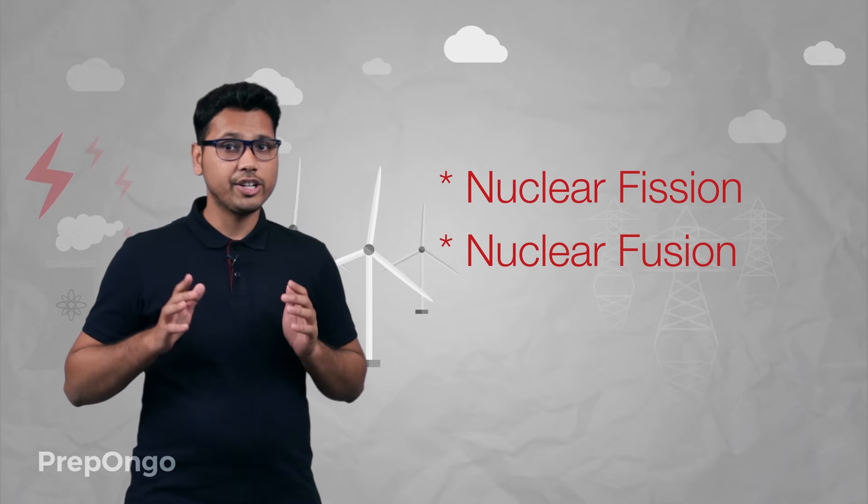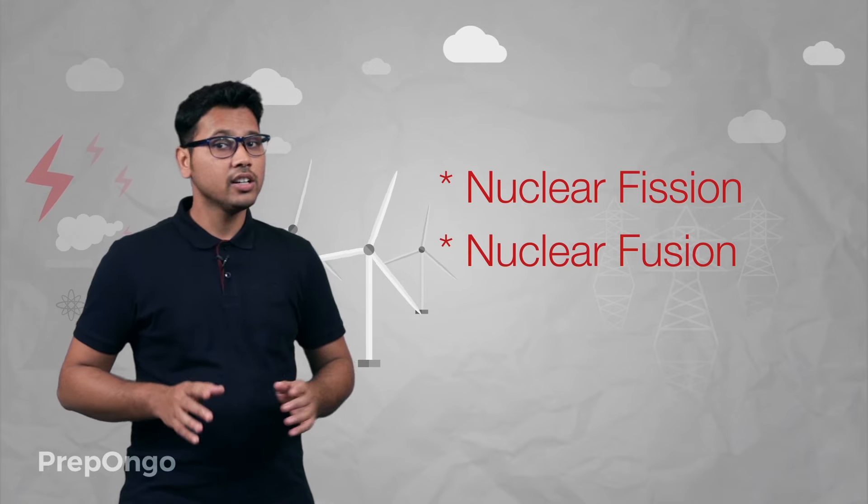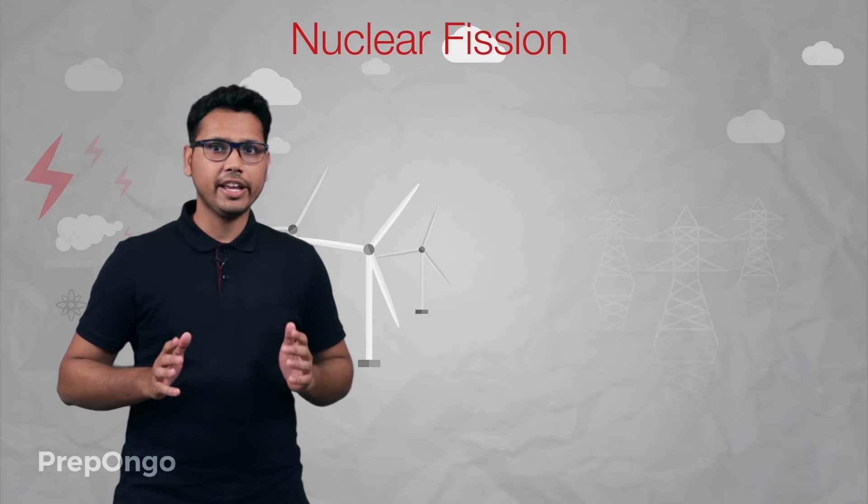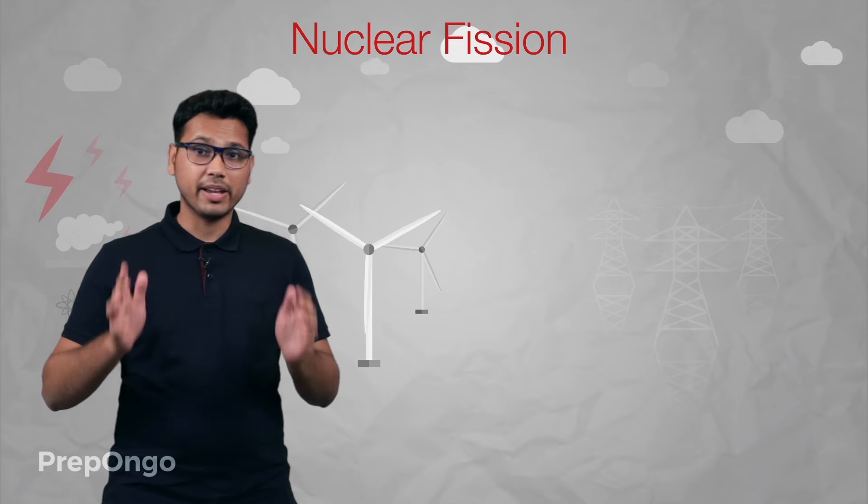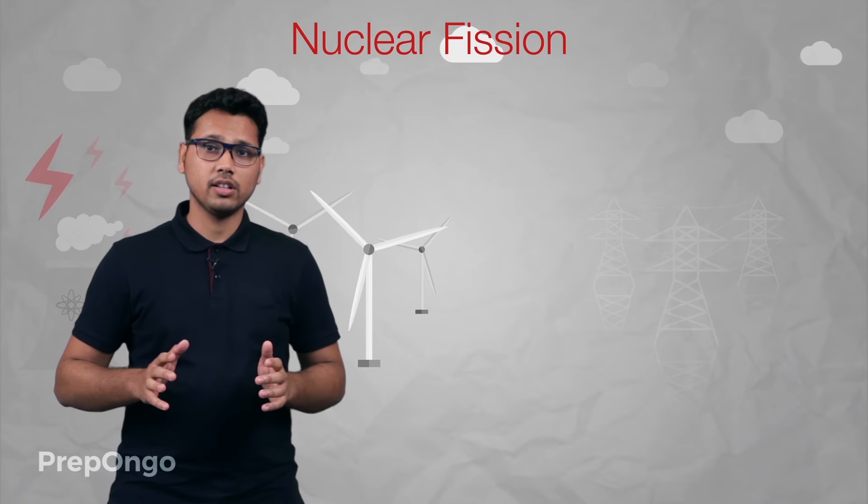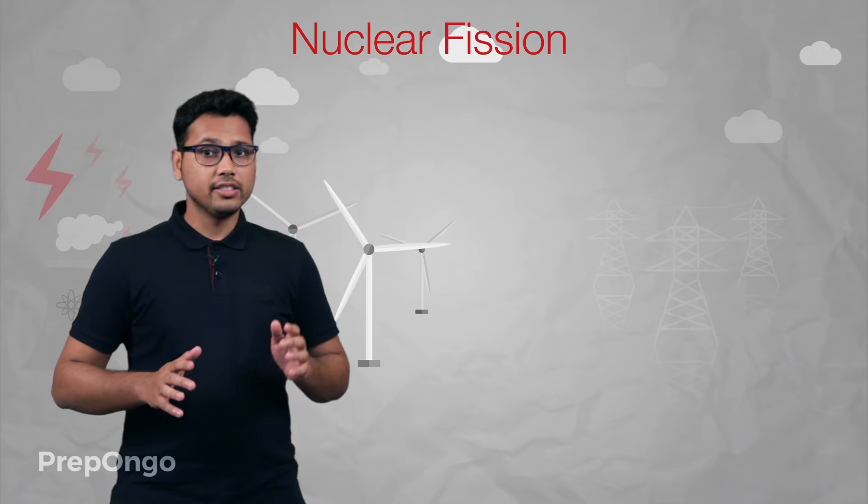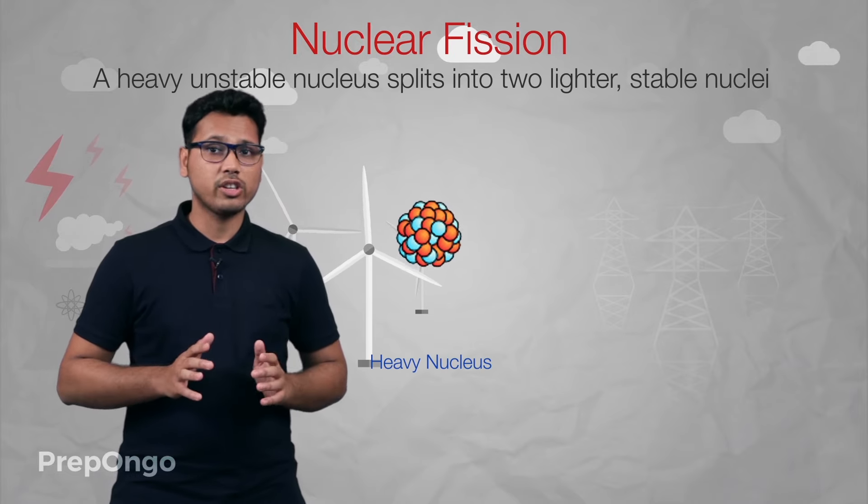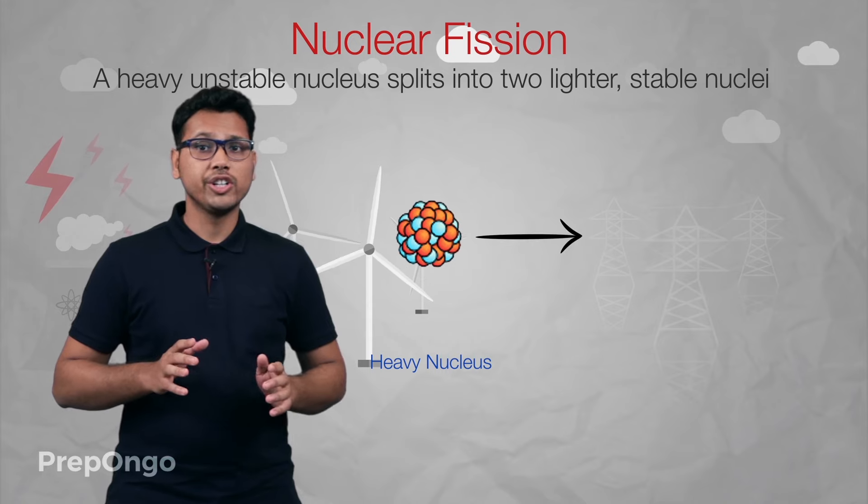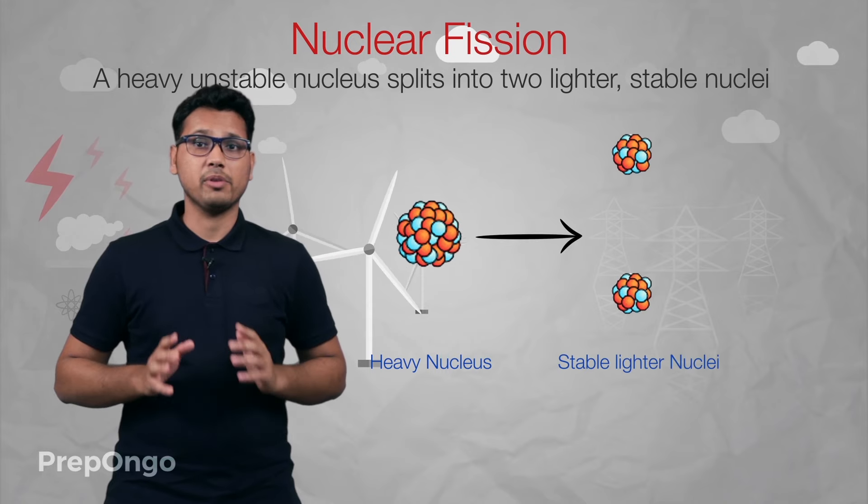So we are going to study first nuclear fission. As the name indicates, fission is linked with splitting of some bigger thing into smaller things. Now in nuclear fission, a nucleus of a heavy unstable element splits into two lighter and stable nuclei.